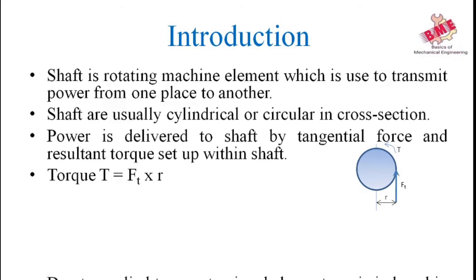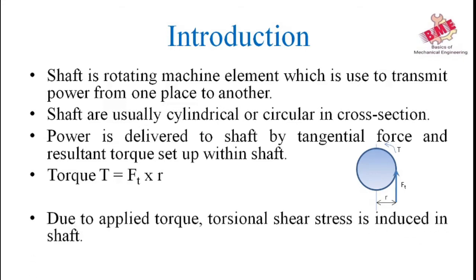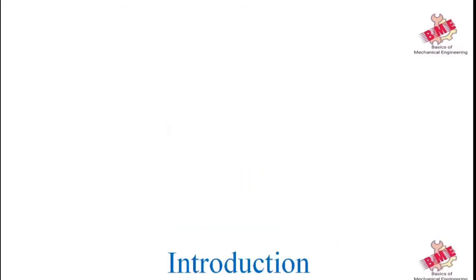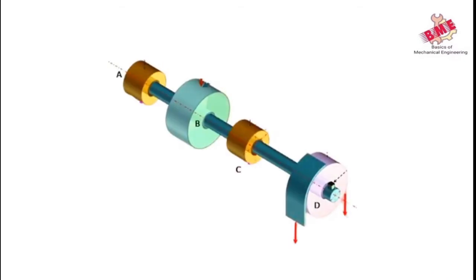Due to the applied torque, torsional shear stress is induced in the shaft. To transfer power from one place to another, various components such as pulleys and gears are mounted on the shaft by means of a key — half part of the key is inserted into the shaft and half part into the coupling connected to the motor or other machine.